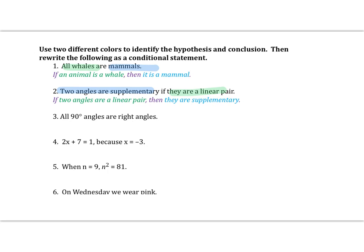Next: all 90-degree angles are right angles. What we're saying here is: if an angle's measure is 90 degrees, then it is a right angle. Pause the video here and see if you can do numbers four, five, and six on your own.